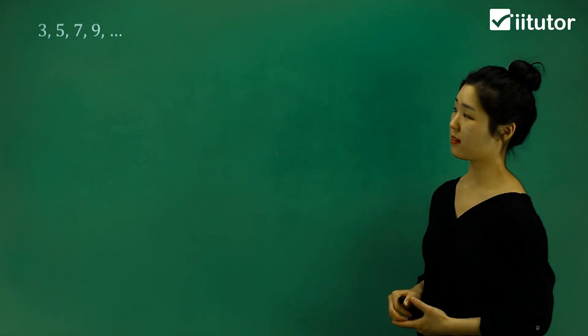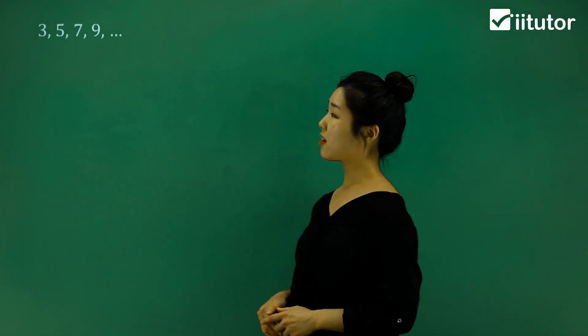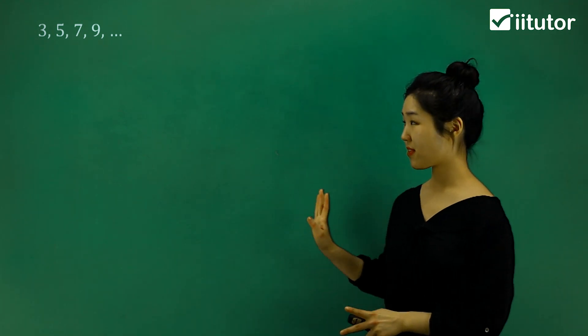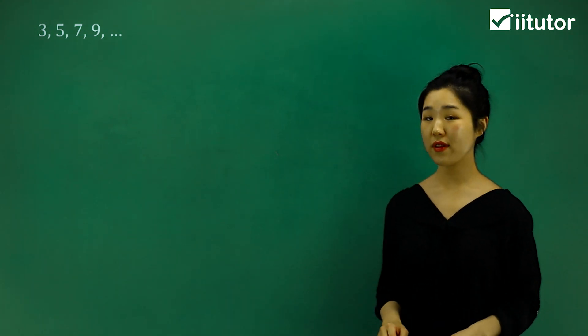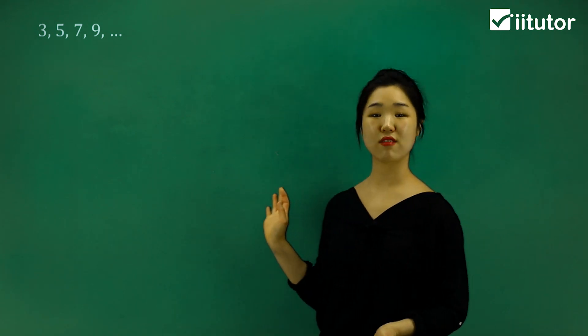Guys, let's describe some number sequences. So you can see that I've got one over here. You can see that the sequence is 3, 5, 7, 9, and it goes on and on. What is the pattern, guys? What are we doing to get each consecutive number?